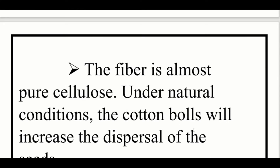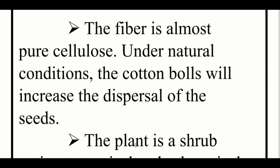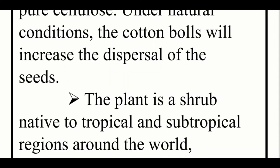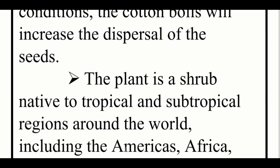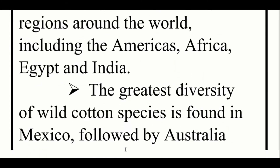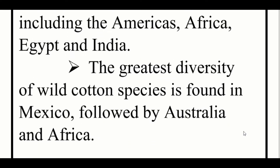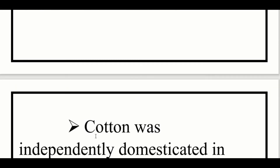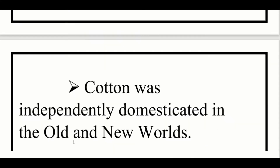Under natural conditions, the cotton boll will increase the dispersal of the seed. The plant is a shrub native to the tropical and subtropical regions around the world, including America, Africa, Egypt and India. The greatest diversity of wild cotton species is found in Mexico, followed by Australia and Africa. Cotton was independently domesticated in the old and new world.